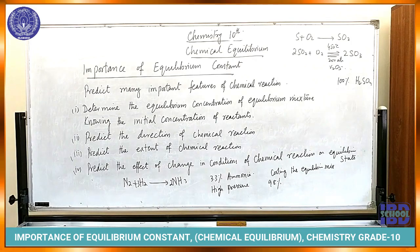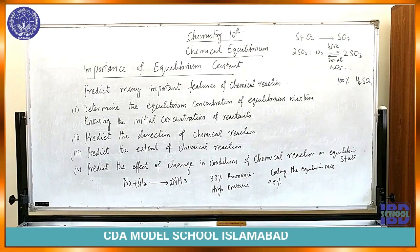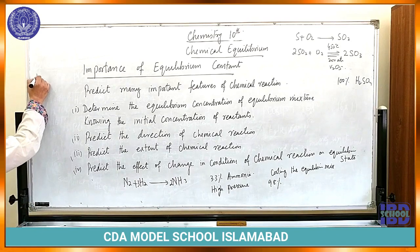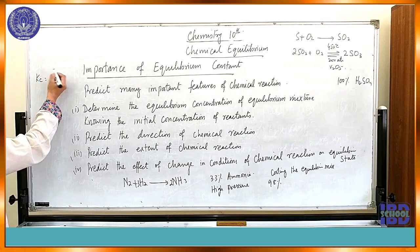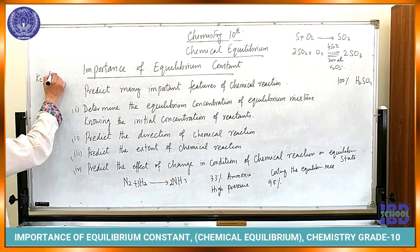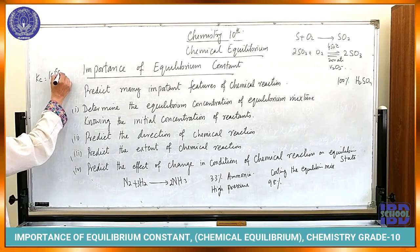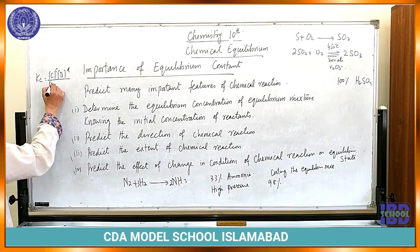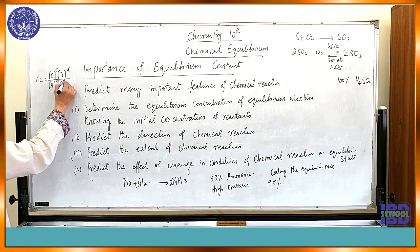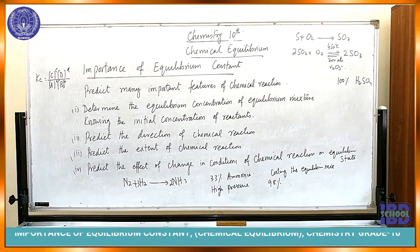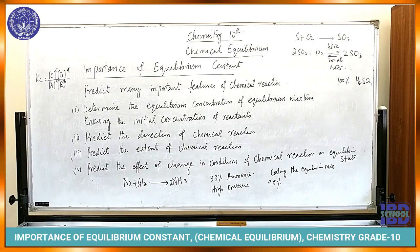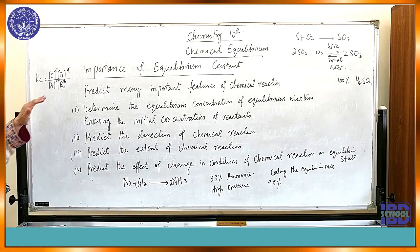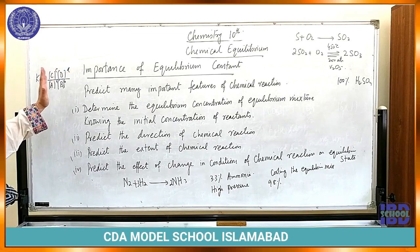Let's recall the equilibrium constant. Kc is equal to the product of concentrations of products — C, D — over the product of concentrations of reactants — A, B. It is simply a ratio between the product of the products and the product of the reactants. Now, what is the importance of this ratio?